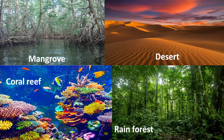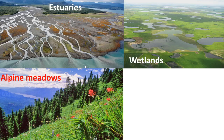To elaborate on India's ecological diversity: mangroves are forests growing near seashores, found in West Bengal. Deserts are found in Rajasthan, coral reefs near Tamil Nadu, rainforests in northeastern parts, and we also have estuaries, wetlands, and alpine meadows. India is quite rich in terms of ecological diversity.